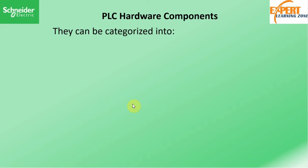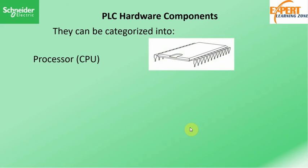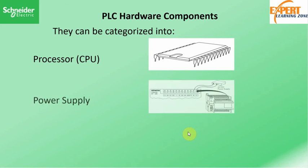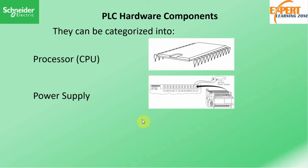Now let's look at some of those components in detail. First, the processor — the processor is responsible for performing all the arithmetic and logical operations of the system. Next we have the power unit, which is responsible for converting the AC voltage to a voltage level that the PLC can understand. Our PLC is an electronic device and as such it works under low power, so the power unit converts it to the appropriate form.